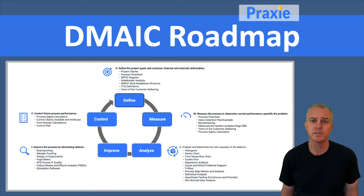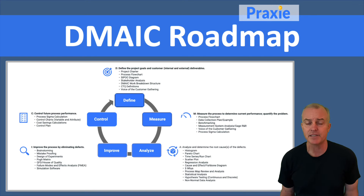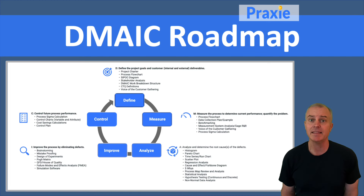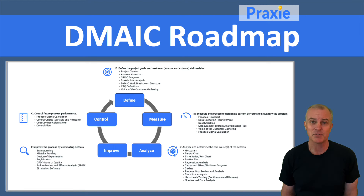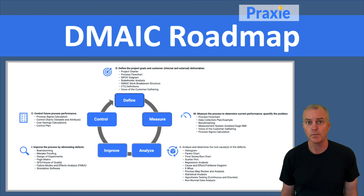Control is about creating the controls, the documentation, and the data-gathering techniques on an ongoing basis to create dashboards that will allow you to sustain the changes you've just created. The roadmap is really about the process steps you go through to ensure that you're covering all the bases and creating the foundation for a successful project.